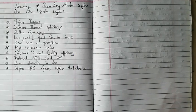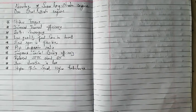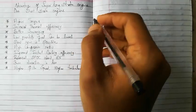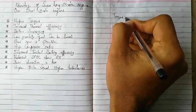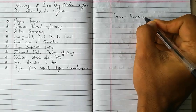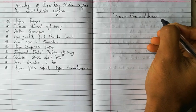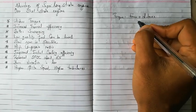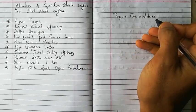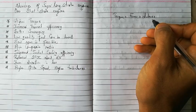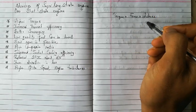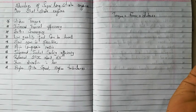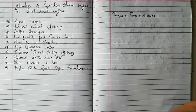The first advantage is higher torque. There is a lot of doubt regarding this because people say torque will be the same whether it is a short stroke or long stroke engine. But there is a difference, because torque is equal to force multiplied by the perpendicular distance. If we increase either the force or the distance, we can increase the torque.